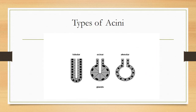The parenchyma or secretory unit of the gland can take different shapes. If it is tube-like it is called a tubular gland; if it is acinar-shaped it is called an acinar gland; and if it is alveoli-shaped it is called an alveolar gland. For example, if a gland has a tubular secretory portion and a single unbranched duct, we call it a simple tubular gland. If the duct branches, it is called a compound tubular gland.